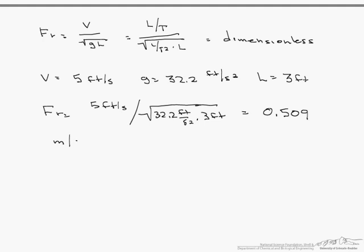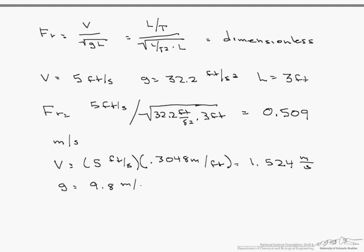Now let's convert to the metric system. Velocity is 5 ft/s times 0.3048 m/ft equals 1.524 m/s. Gravity in SI units is 9.8 m/s². Length is 3 feet times the conversion factor equals 0.9144 meters.